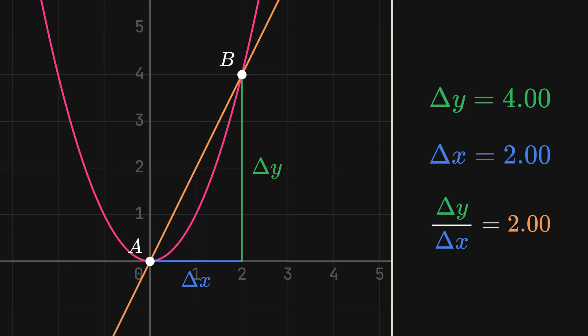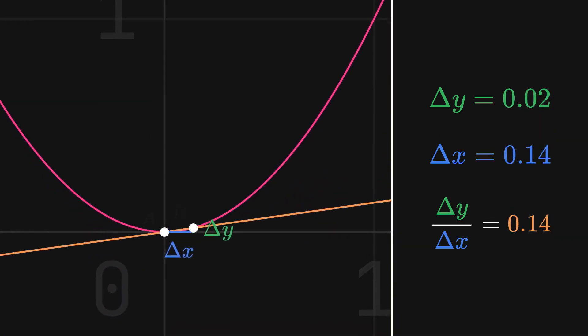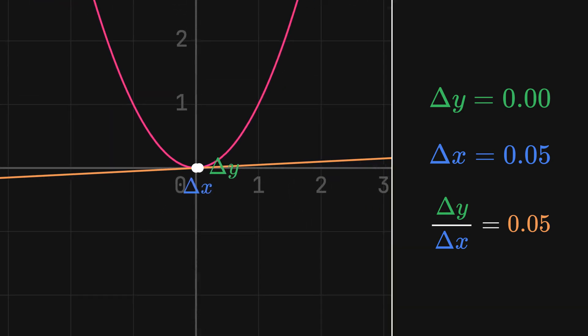Look what happens when B gets closer to A. The slope between the two points gets closer to the real slope of A, the white line.